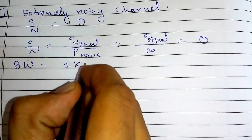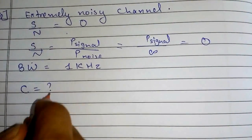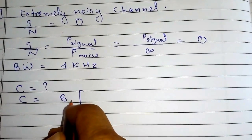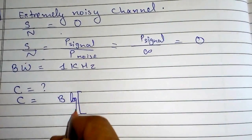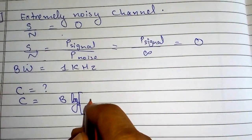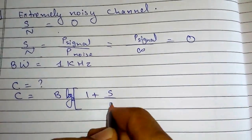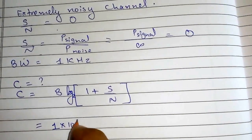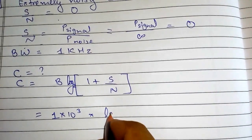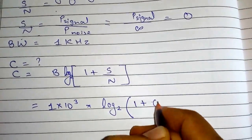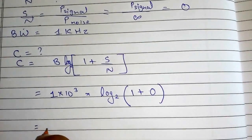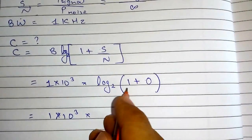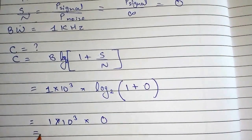I need to find channel capacity. Channel capacity C is bandwidth multiplied by log base 2 of (1 + S/N). My bandwidth is equal to 1 kilohertz, which is 1 × 10³, multiplied by log base 2 of (1 + S/N). Since S/N is 0, I have 1 × 10³ into log base 2 of 1. Log base 2 of 1 is equal to 0.